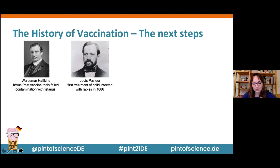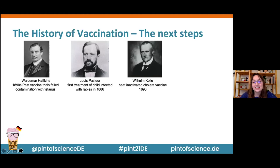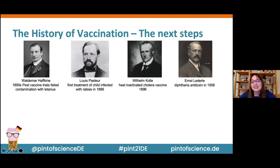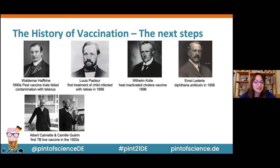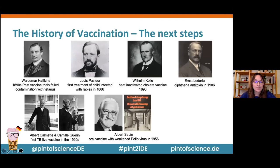I should mention: Louis Pasteur actually failed his first bachelor's degree in biology — so anybody struggling with their grades, there's still hope; you can still save the world from infectious disease. Next, William Colle was the first to develop heat-inactivated cholera vaccines in 1896. Then Ernst Lederle developed a diphtheria toxin. Albert Calmette and Camille Guérin were the first to develop a TB live vaccine in the 1920s.